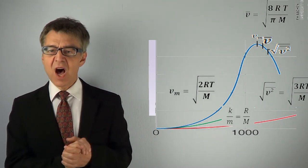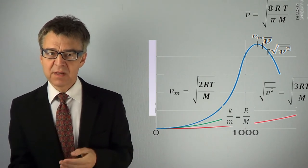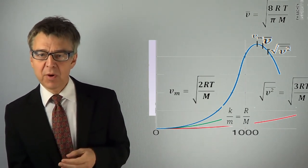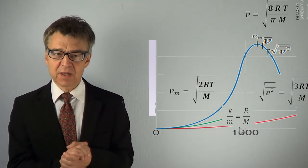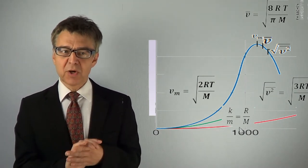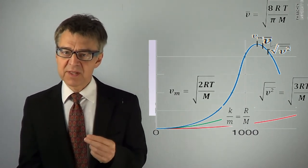In these three formulas, you can either use r over m, gas constant over molar mass, or the ratio k over m, the Boltzmann's constant over mass of an individual particle. Anyway, it is important to always use consistent units. I recommend SI units.